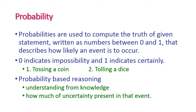What is the probability of getting heads or tails on a coin? Both have a 50 percent possibility because a coin has only two sides. For the dice example, the probability of getting any particular number is 0.16, that is 16 percent, because there are six sides in a dice. Probability-based reasoning involves understanding the knowledge and how much certainty is present in that event.